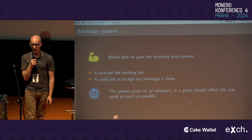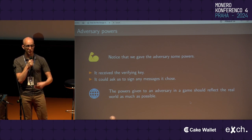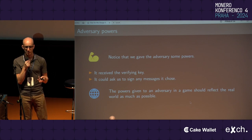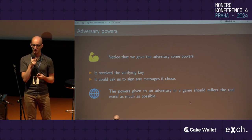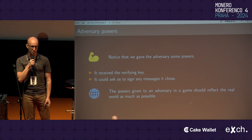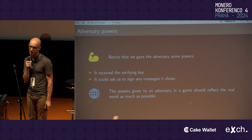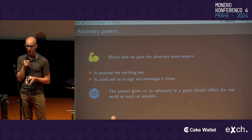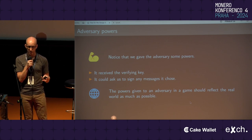Notice something about this game — we gave the adversary certain powers. The first is that it received the verifying key, which makes sense: in a blockchain-type situation, the entire network needs access to verifying keys. The adversary also had the power to ask us to sign any message it chose, which in a blockchain context could mean tricking us into sending a transaction. The idea is that the powers the adversary has in the game should reflect the real world as much as possible, because the security model only makes sense if you've modeled the real world correctly.